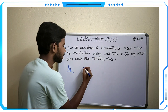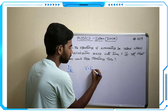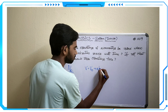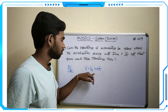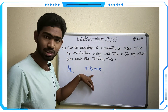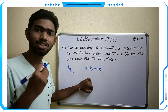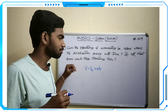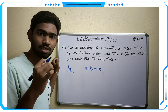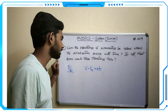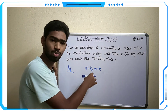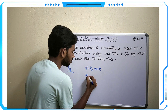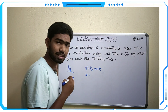The first kinematic equation is v = v₀ + at, which we can also write as v = u + at. Here v₀ means the velocity at the initial position, that is at time t = 0, also represented as u in daily usage. So the first equation is v = u + at.